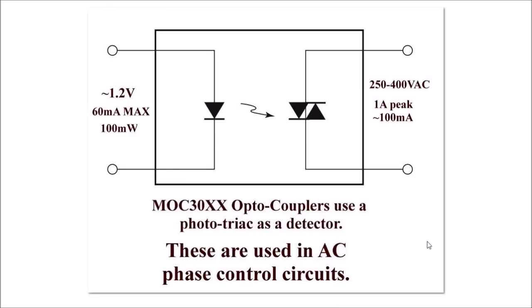Let's take a closer look at the MOC 30XX series optocouplers. Again we have an LED emitter. According to the spec sheet, we have a maximum input current of 60 milliamps and the device has a dissipation of 100 milliwatts at about 1.2 volts. What you don't want to do is drive this thing constantly at 60 milliamps. Generally between 10 and 15 milliamps is sufficient.